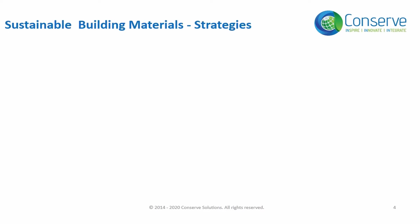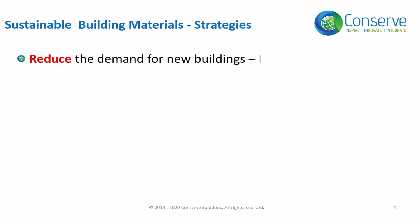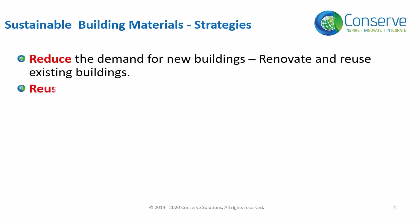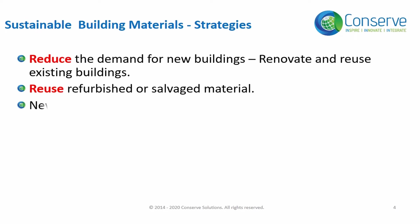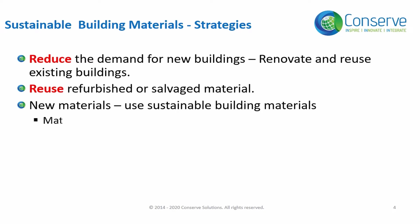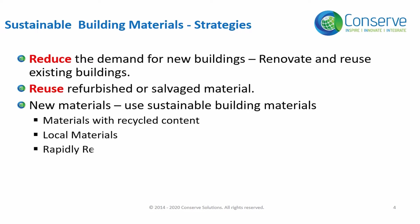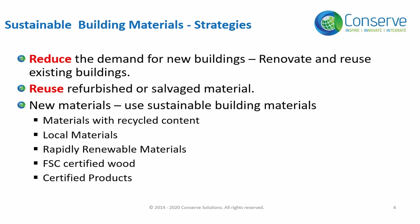The strategies to incorporate sustainable building materials can be broadly classified into three areas. Number one: reduce the demand for new buildings by reusing existing buildings, renovating and refurbishing them, and extending their life. Number two: reduce the demand for new materials by reusing salvaged and refurbished materials. Finally, if new materials are to be procured, procure sustainable building materials — including materials manufactured with recycled content, locally manufactured materials, rapidly renewable materials, certified wood, and certified products.